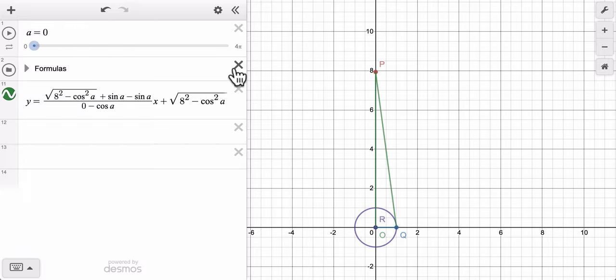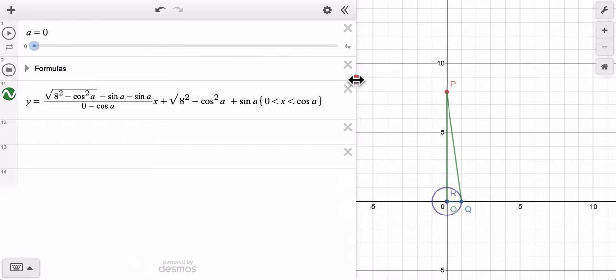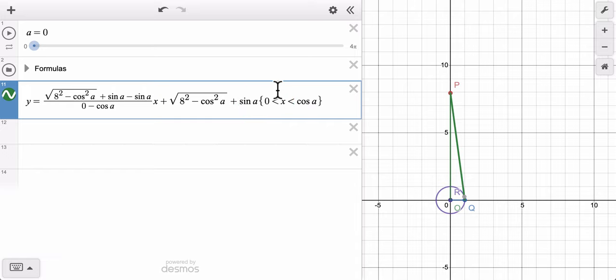So if we go back to our formula, let's stretch this out a little bit to see. I'm going to use the min function, M-I-N for min. Pick the minimum. So tell it, pick whatever is smaller, 0, which is where P is, or the cosine of A, which is where Q is.